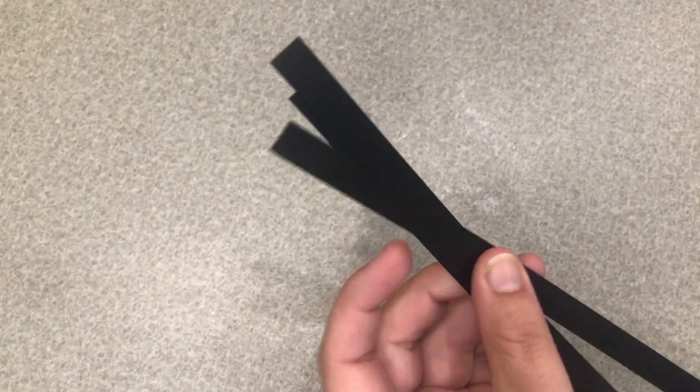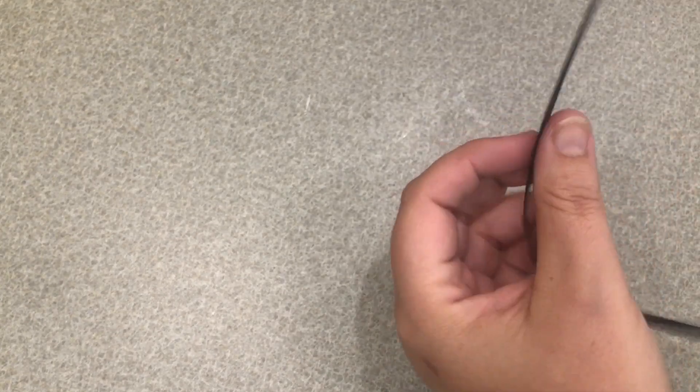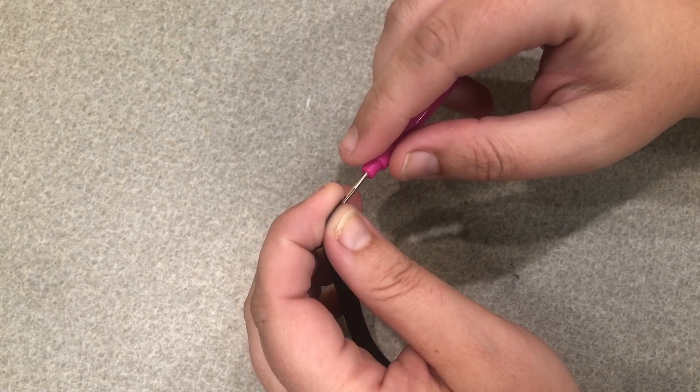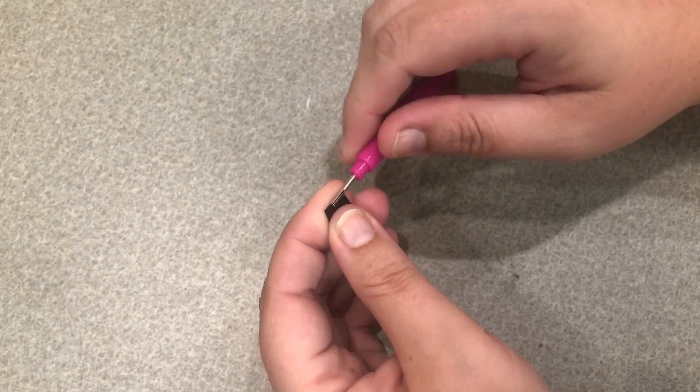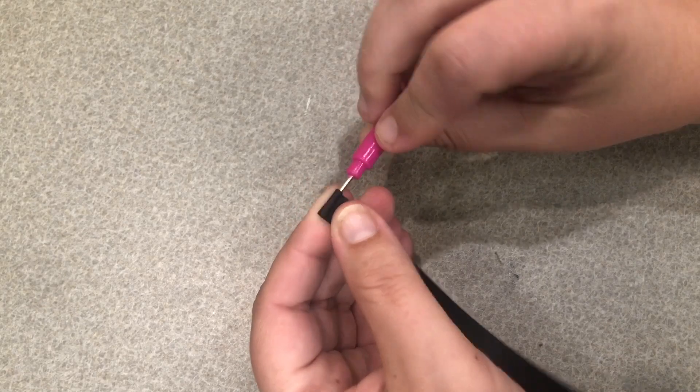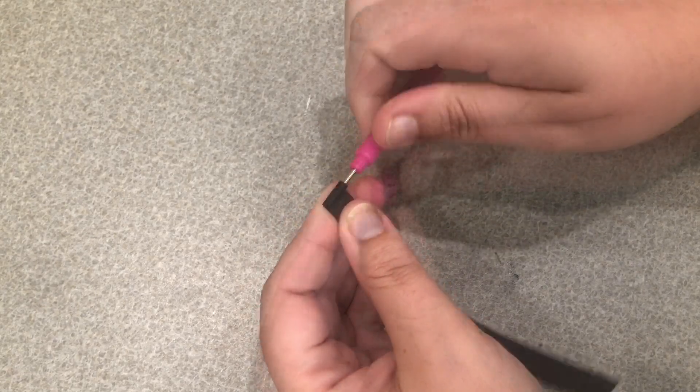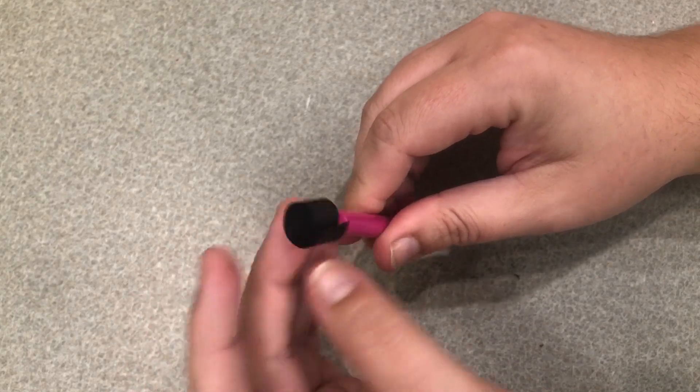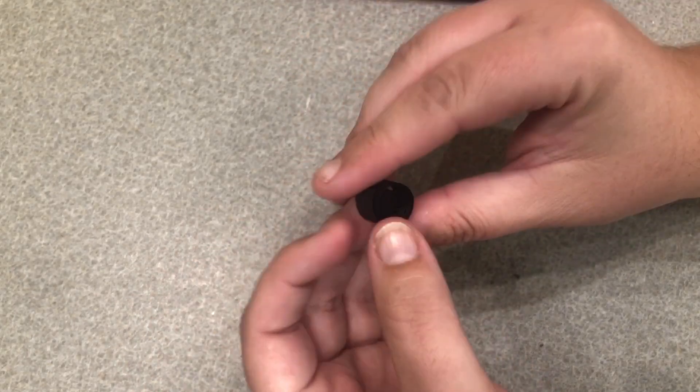And then we'll cut it and for one third we're going to roll it up into a ball. Once it is rolled up we can let it go and remove it from our quilling tool.